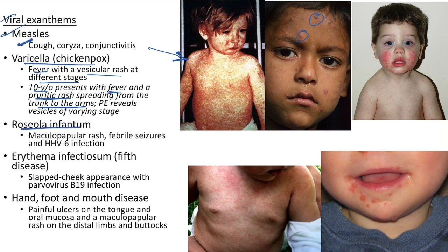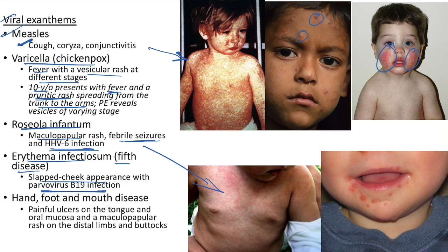Roseola infantum: maculopapular rash, associated febrile seizures, caused by human herpesvirus 6. Erythema infectiosum (fifth disease): slapped cheek appearance, caused by parvovirus B19 infection.